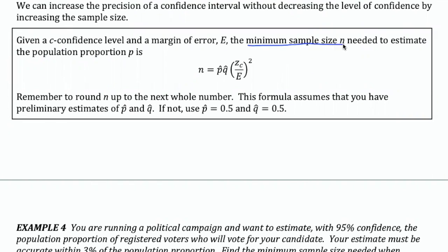So again, instead of estimating a population mean, we're estimating a population proportion of success for a binomial experiment. As with the previous version of this formula, we always round up to the next whole number. And the formula does assume that you have preliminary estimates of p-hat and q-hat. If not, you're supposed to use 50% for each. So in order to use this formula, we have to have a way to estimate the probabilities of success and failure.